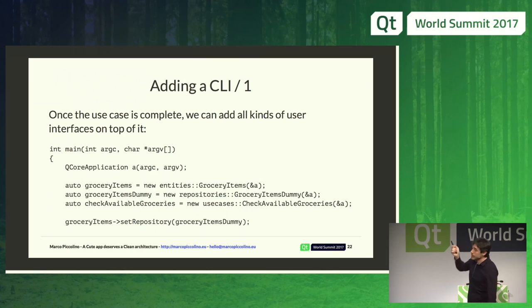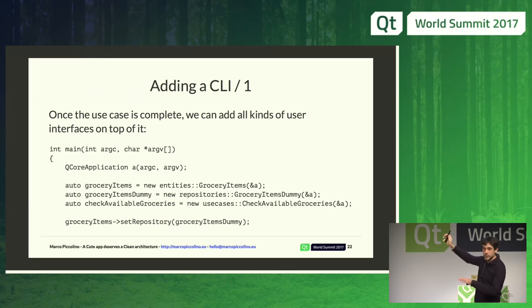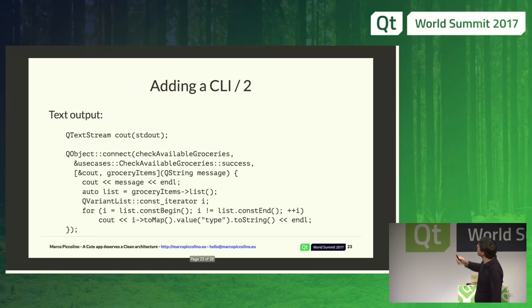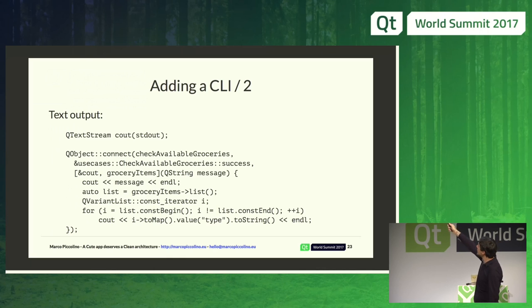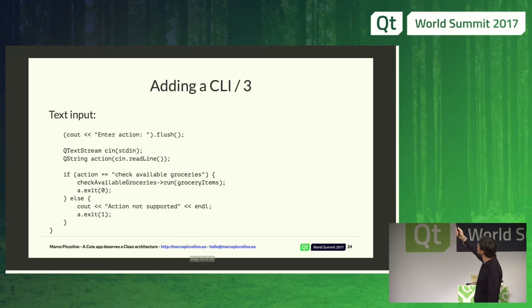Here is a simple implementation of a command line interface for this use case: I create my grocery items entity, then create my repository, my use case, and do all the piping and wiring. I care about text output — when my use case returns a success signal, I take the success message and print it, then take the list of results and print all the records.